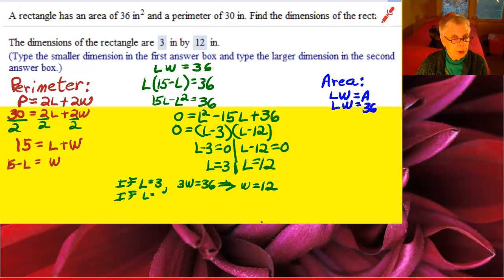If L equals 12, then I'll say 12W equals 36, so W equals 3.